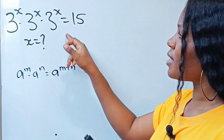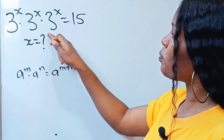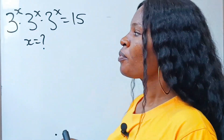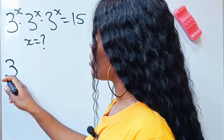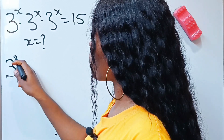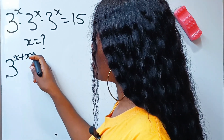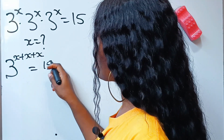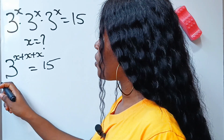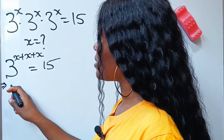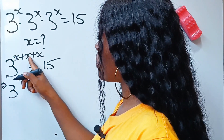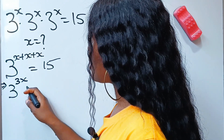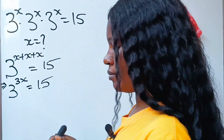Therefore, since we have the same base, we are going to pick one and add the powers. So we have 3 to the power of x plus x plus x plus x is equal to 15. This implies that 3 to the power of 3x is equal to 15.